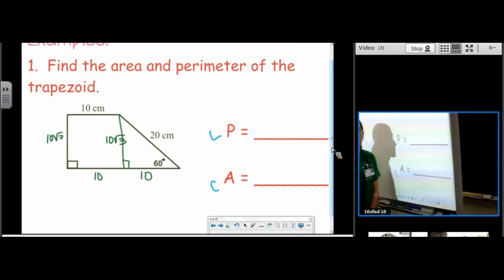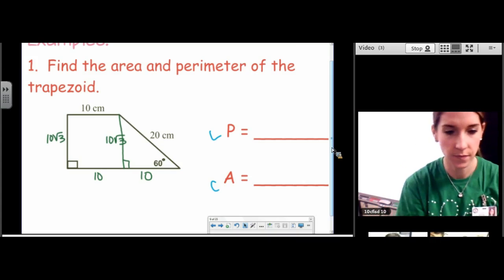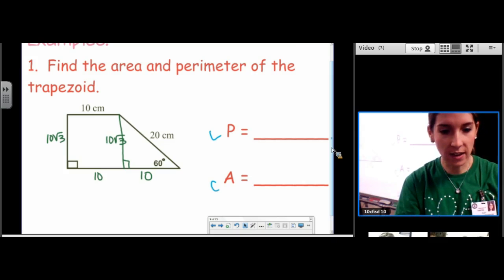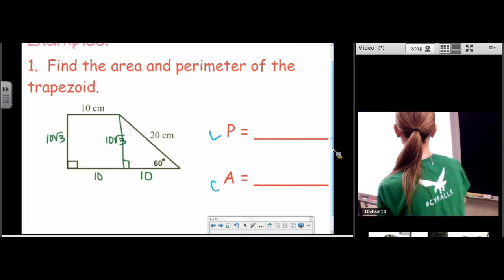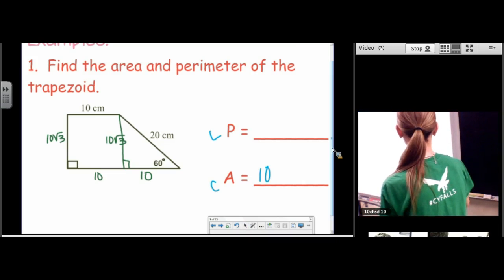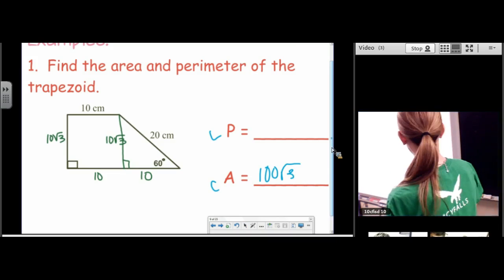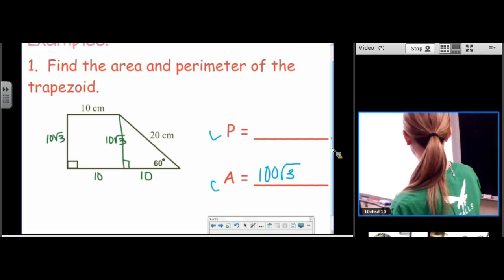x root 3, 2x. Okay. Chloe got the area. She got 100 root 3. Let's see. Sorry. Centimeters squared.